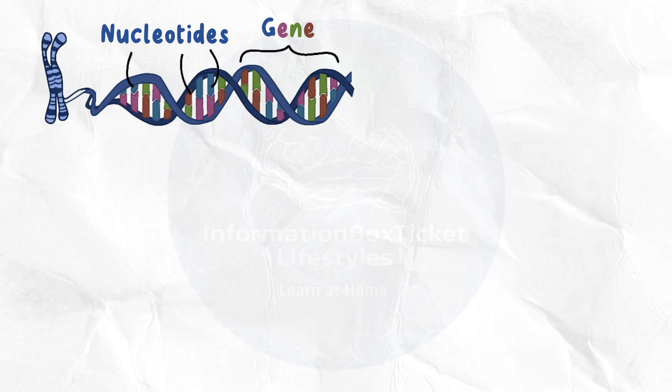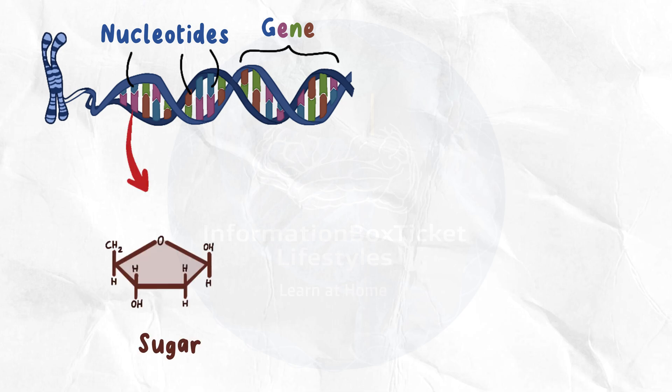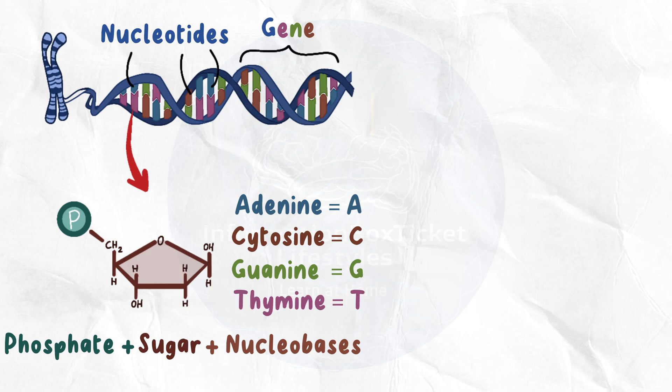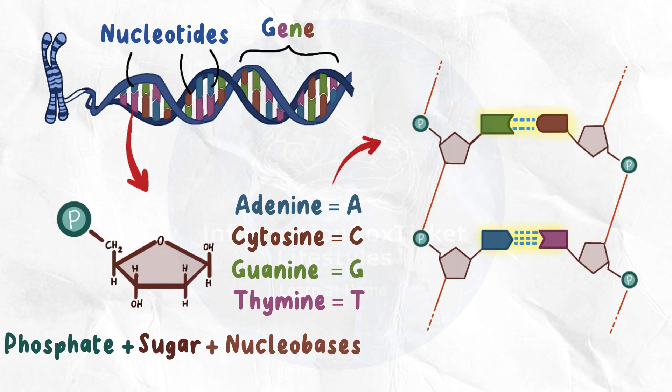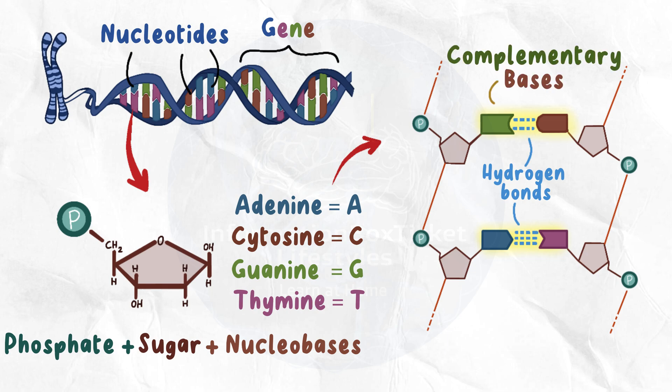DNA nucleotides are composed of a sugar, deoxyribose, a phosphate, and one of the four nucleobases: adenine, cytosine, guanine, and thymine, abbreviated as A, C, G, T. To form double-stranded DNA, the nucleotides on one strand form hydrogen bonds with the nucleotides on the opposite strand. Adenine pairs with T and C bonds with G, thus the name complementary bases.